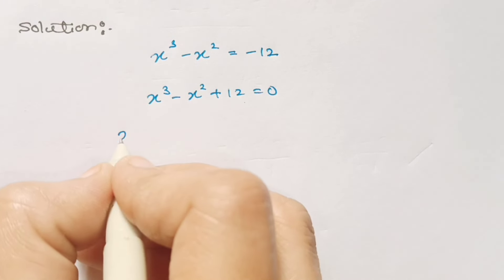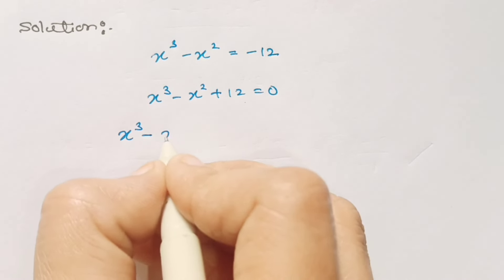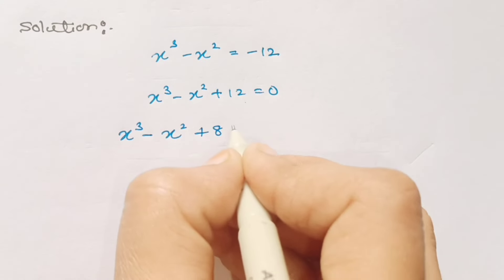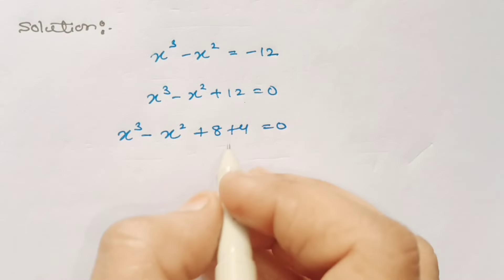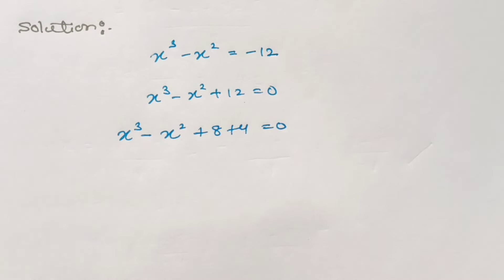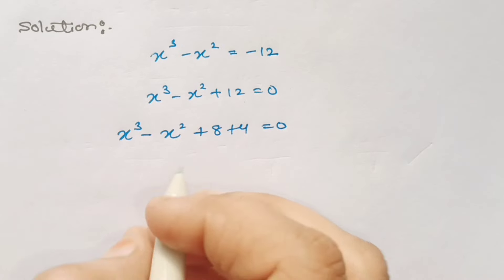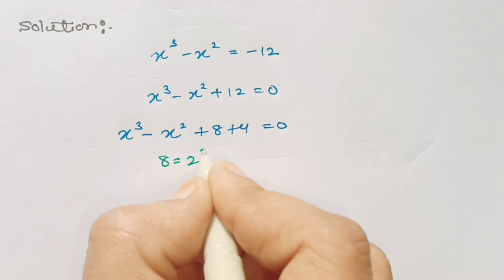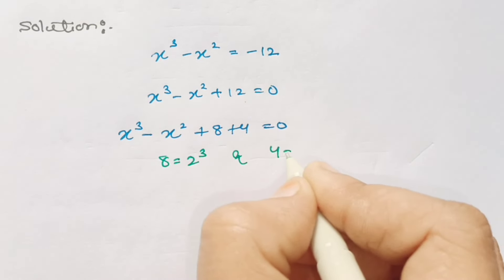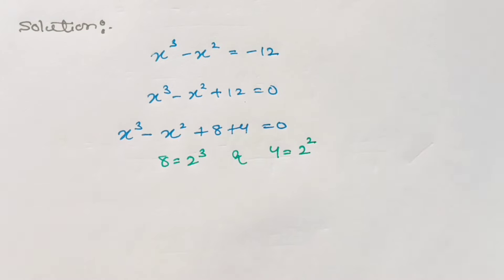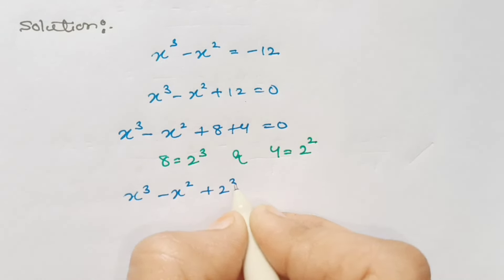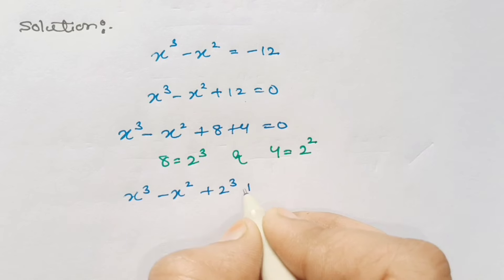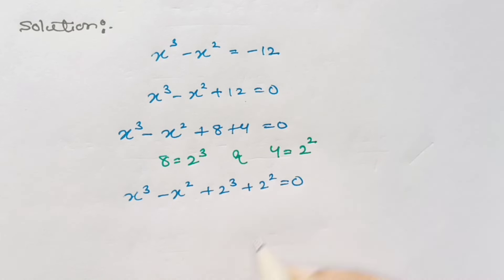Let's write 12 as 8 plus 4. So we will get x cubed minus x squared plus 8 plus 4 is equal to 0. We also know 8 is nothing but 2 cubed and 4 is 2 squared. So in place of 8 and 4 we put 2 cubed and 2 squared, giving x cubed minus x squared plus 2 cubed plus 2 squared is equal to 0.